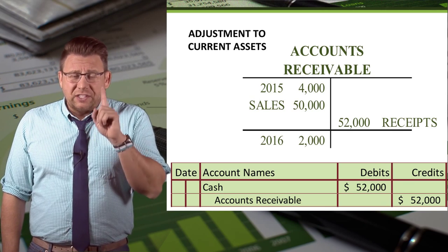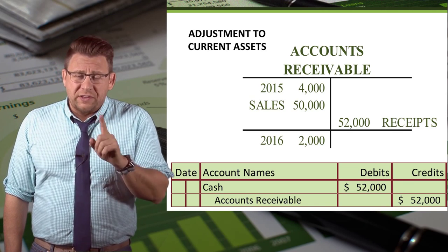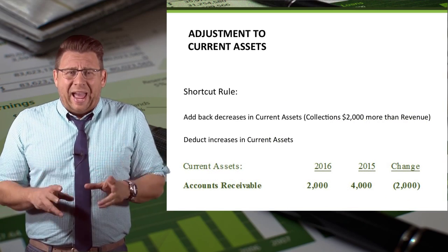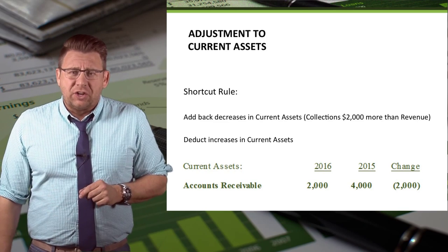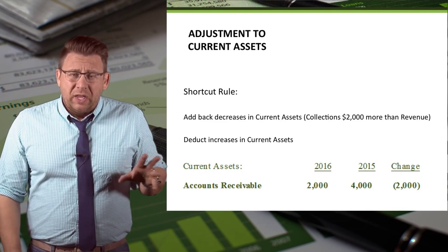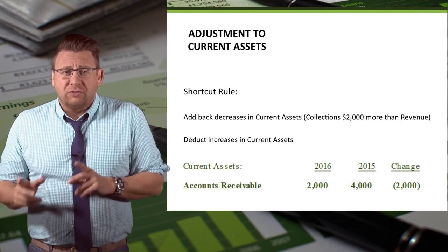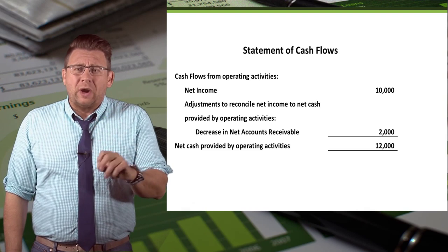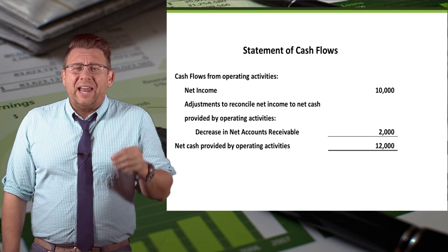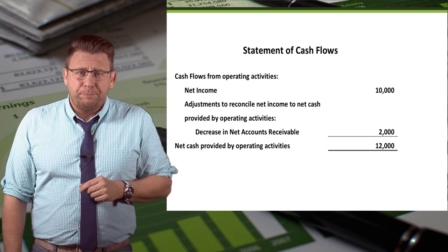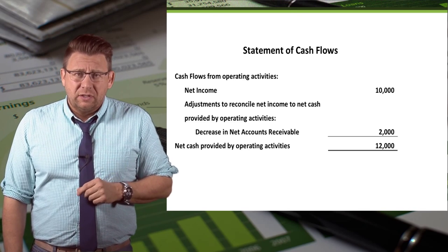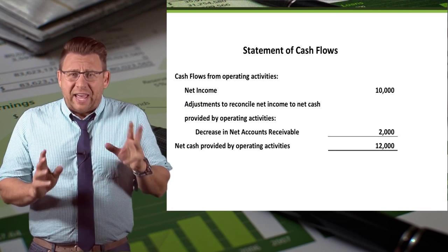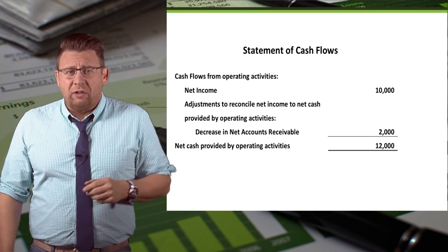Notice that the collection is $2,000 more than sales revenue. That's important. So back to our shortcut rule: we add back decreases in current assets because in this example, cash collections are $2,000 more than sales revenue. Since sales revenue was used to arrive at net income, we need to add $2,000 more to net income to arrive at the cash amount. Assuming net income is $10,000, the cash provided from operating activities would be $12,000.